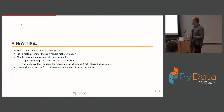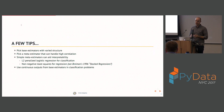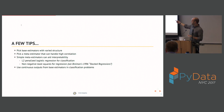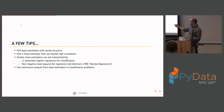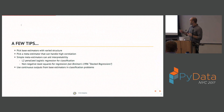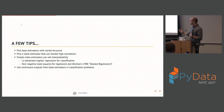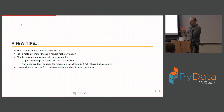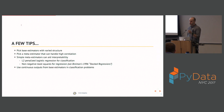You want simple meta-estimators — this also lets you read off how much one model is better than another. For classification, I recommend L2-penalized logistic regression: it's a simple linear model, you can read off the coefficients, and the L2 penalty helps deal with the correlation problem across your base estimators' predictions. For regression, use non-negative least squares. Leo Breiman, of random forest fame, wrote a paper about stacked regressions and recommends non-negative least squares. The non-negativity constraint deals with the correlation issue.